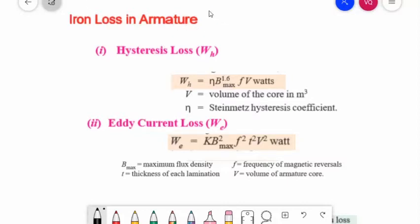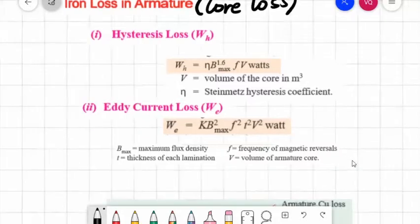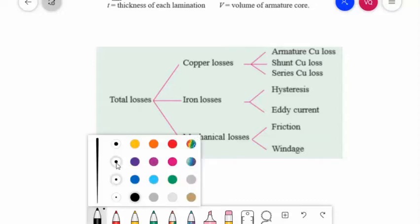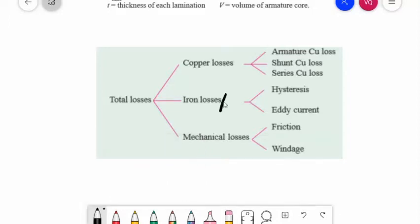This is the summary of the total losses in a DC generator. We have the iron loss, also known as core loss, which consists of hysteresis and eddy current losses. Next are the copper losses. We have the armature copper loss, the shunt copper loss, and the series copper loss.